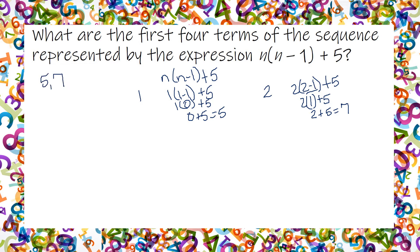Now I've got to do my third one. Plug it in again. 3 times 3 minus 1 plus 5. So 3 minus 1 gives me 2. Then I've got to multiply 3 times 2. That's 6. And I can add 6 plus 5 and get 11.